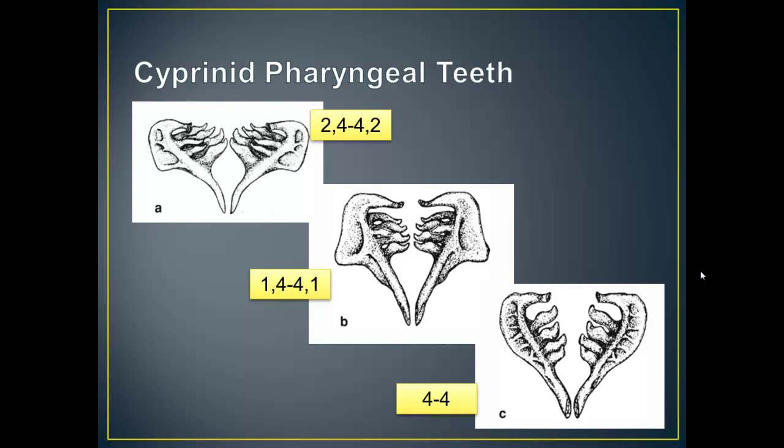Because we use these a lot, there is a formula for telling you how many teeth are on each arch. For example, in the upper left you've got a 2,4-4,2. Starting on the outside of the left arch, going to the inside, continuing to the inside of the right arch, and then the outside of the right arch. In the middle we have 1,4-4,1. And then in letter C, you've only got one row of pharyngeal teeth, so it's just 4-4.